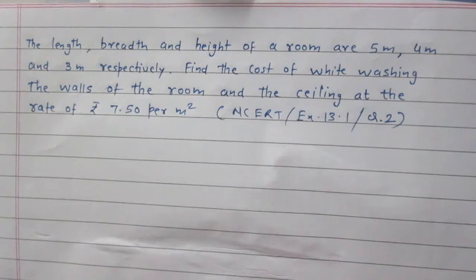Find the cost of whitewashing the walls of the room and the ceiling at the rate of Rs. 7.50 per meter square. We are given a room whose length is equal to 5m, breadth is 4m and height is 3m.